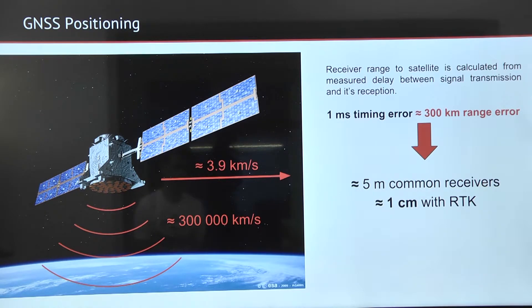But with modern receivers, we can achieve the positioning accuracy of 5 meters and even 1 cm with augmentation techniques such as RTK.